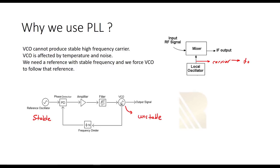We need a reference with a stable frequency and we force the VCO to follow that reference. Basically we can call the reference the master and the VCO the slave. The reference frequency is constant, but the VCO frequency changes. If we make a system and force the VCO to follow this frequency, the VCO output will have a stable frequency. That's the main idea of a PLL.